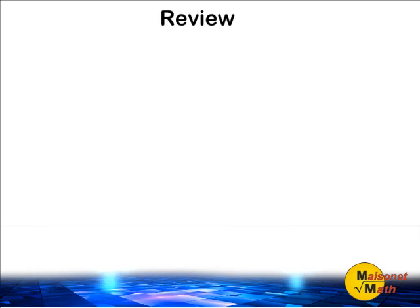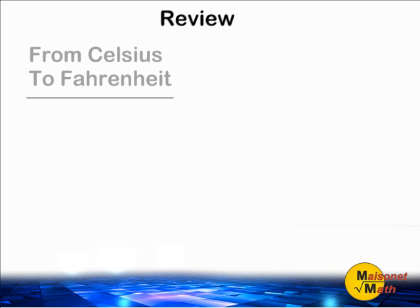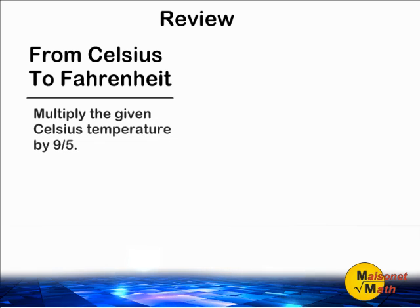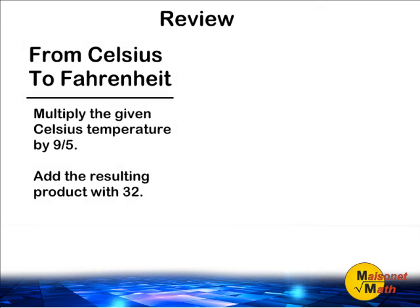So, remember, when converting from Celsius to Fahrenheit, you have to start off by multiplying the given temperature in Celsius by 9/5. And after multiplying that temperature by 9/5, you take the resulting product and you add it with 32.